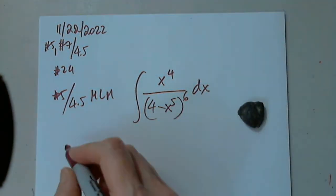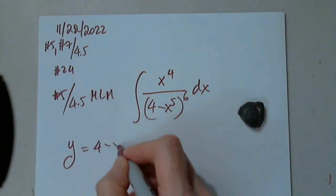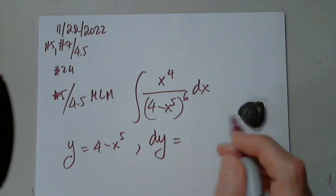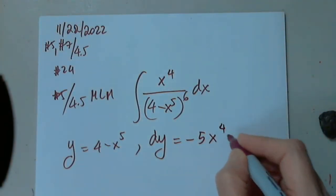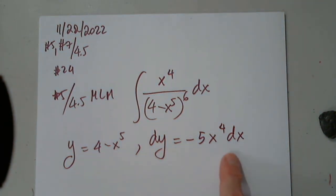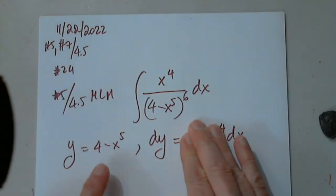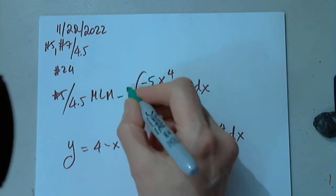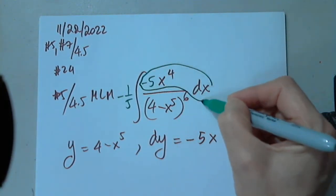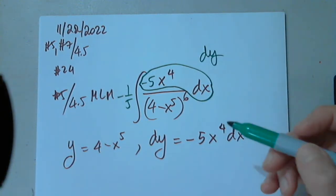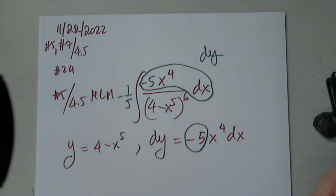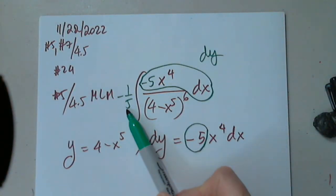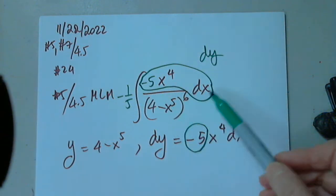So if I say let y be 4 minus x to the fifth, immediately I need dy as negative 5x to the fourth dx. We know that dy is f prime dx. No problemo. All I had to make up is a number, a factor. It's not a problem. I can multiply by negative 5 and divide by negative 5. So now I have my dy.